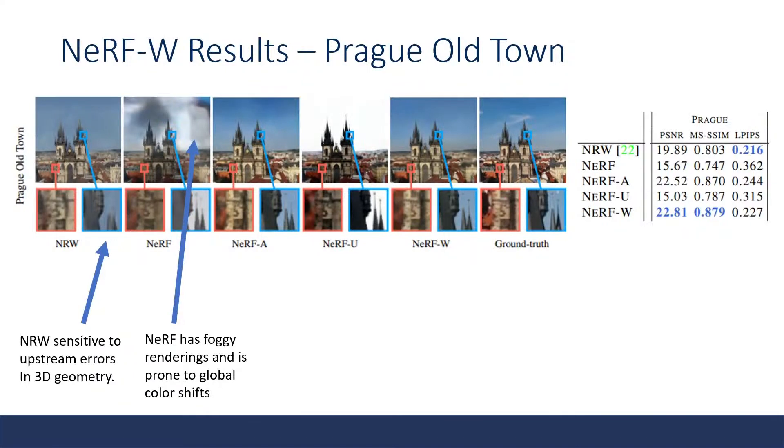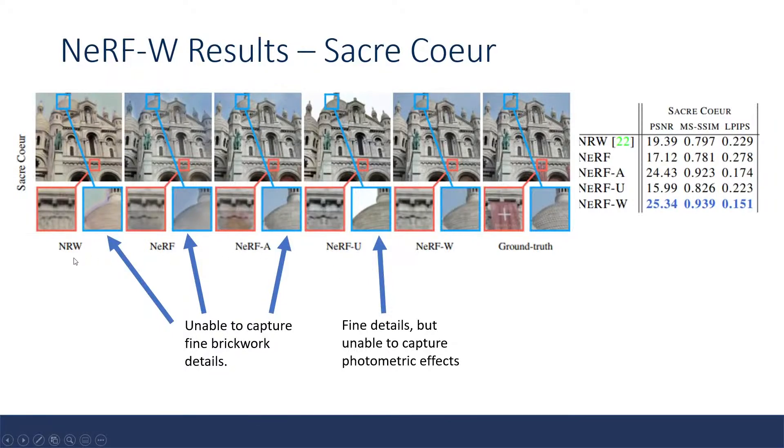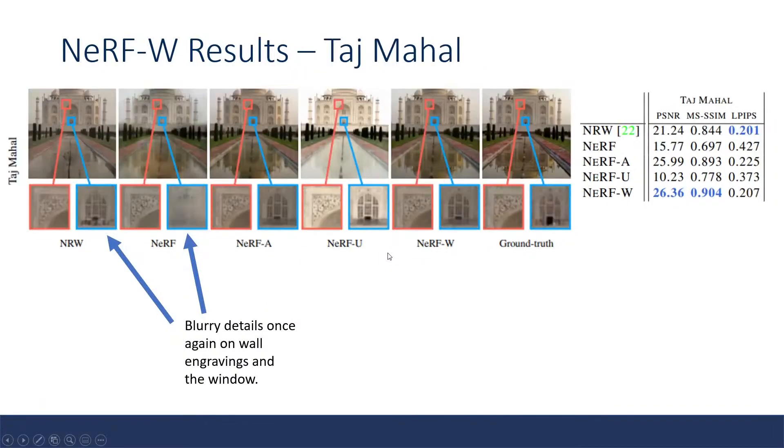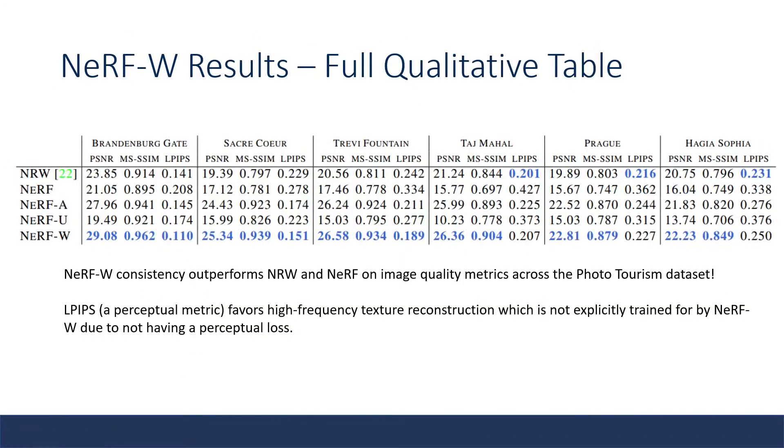Here we show some of the qualitative results of NeRF-W. Notice that NRW is sensitive to upstream errors in 3D geometry and you can see the difference in quality between the towers. In addition, NeRF has a lot of foggy renderings and is prone to global color shifts. Another difference is that NRW, NeRF, and NeRF-A are all unable to capture the fine brickwork details but NeRF-W is capable of doing so. NeRF-U is also capable of capturing the fine brickwork details but is unable to capture photometric effects. We also notice that NRW and NeRF once again have very blurry details on wall engravings and windows as compared to NeRF-W. This is the full qualitative table and we can see that NeRF-W consistently outperforms NRW and NeRF on image quality metrics across the photo tourism dataset.